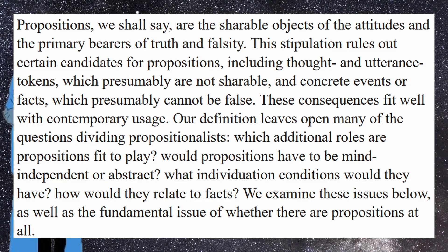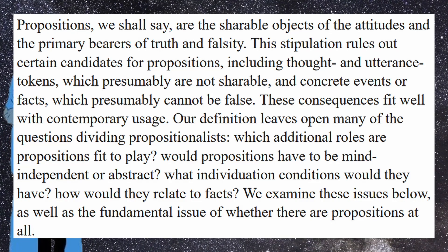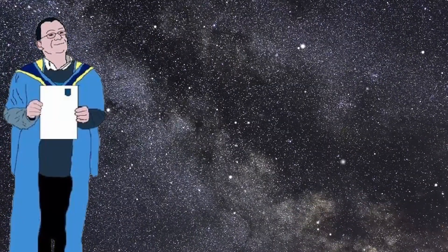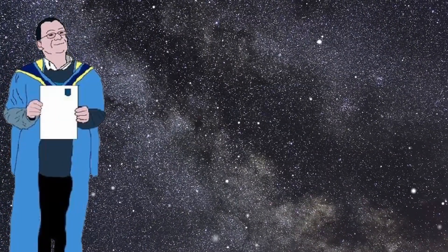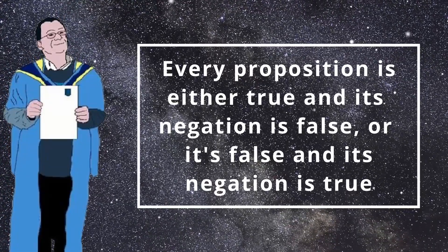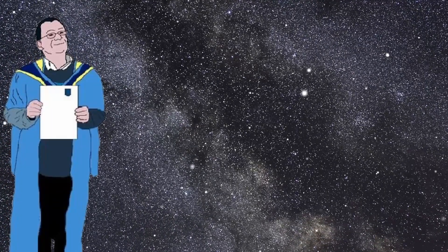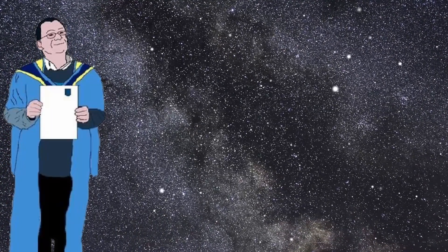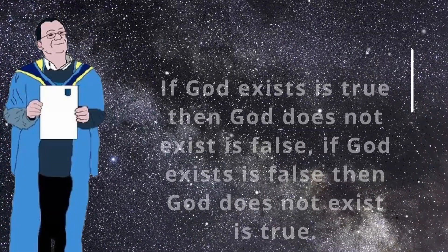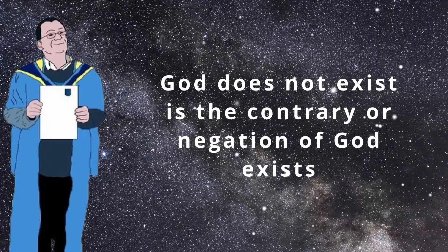To understand the LEM, it is enough to understand what it means for a proposition to be truth-apt. The LEM is a principle that states that for every proposition, either the proposition or its negation is true, and there is no other option. Continuing with the example 'God exists,' the LEM states that either 'God exists' is true, or 'God does not exist' is true — because 'God does not exist' is the negation of 'God exists.'